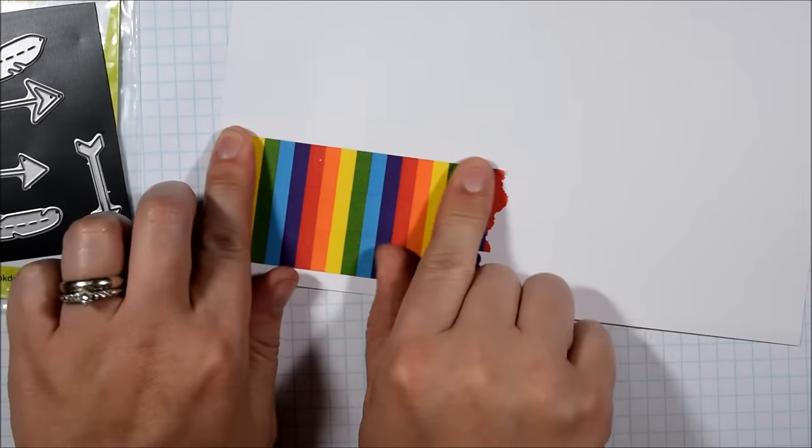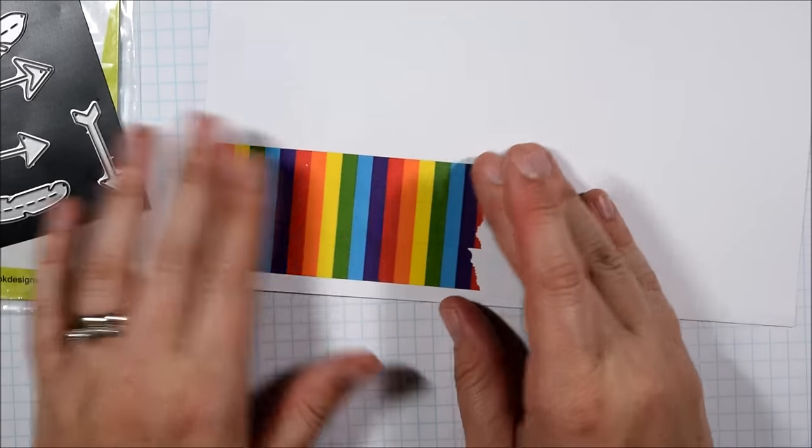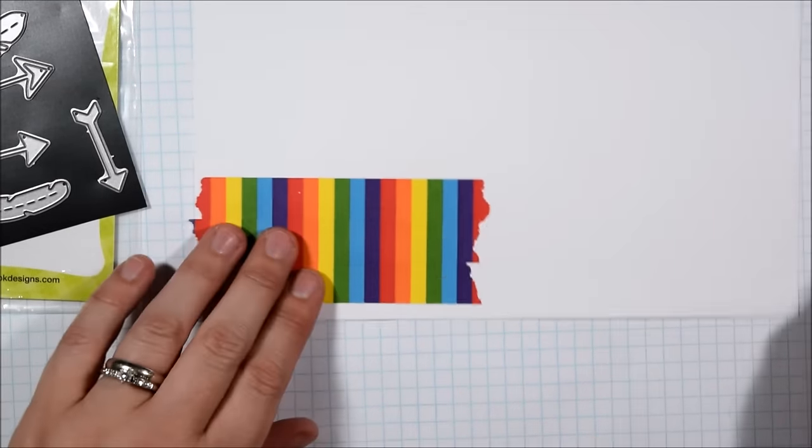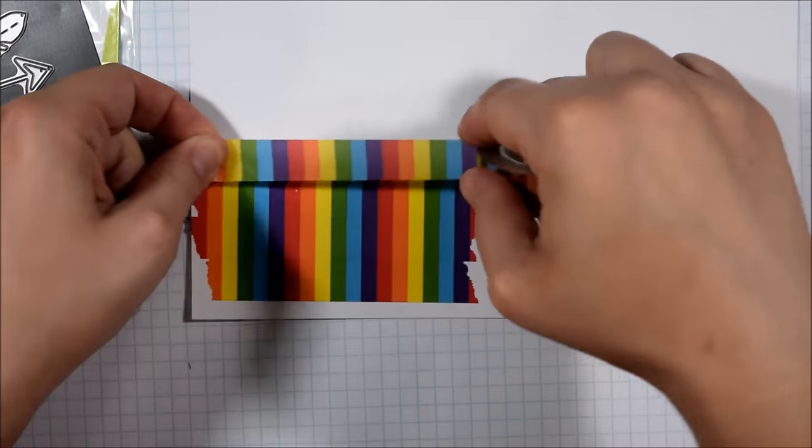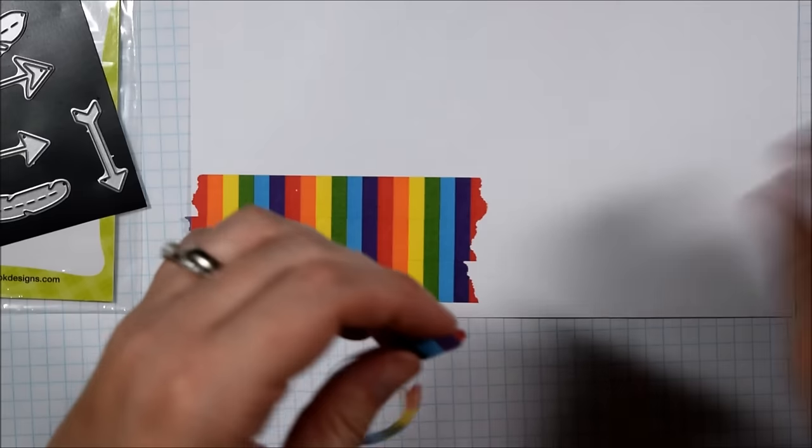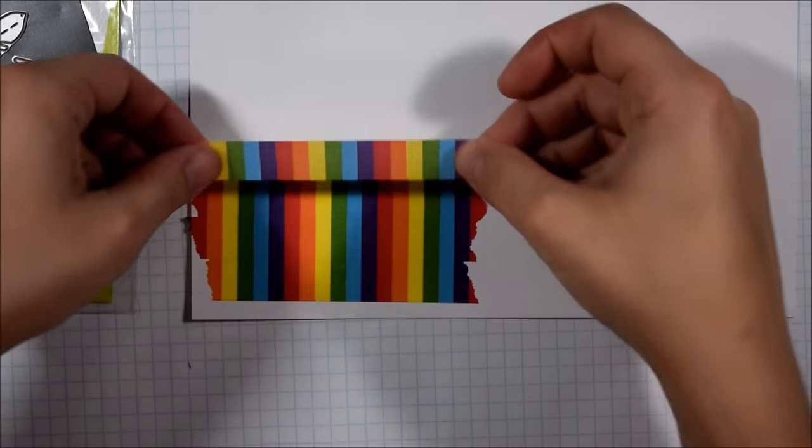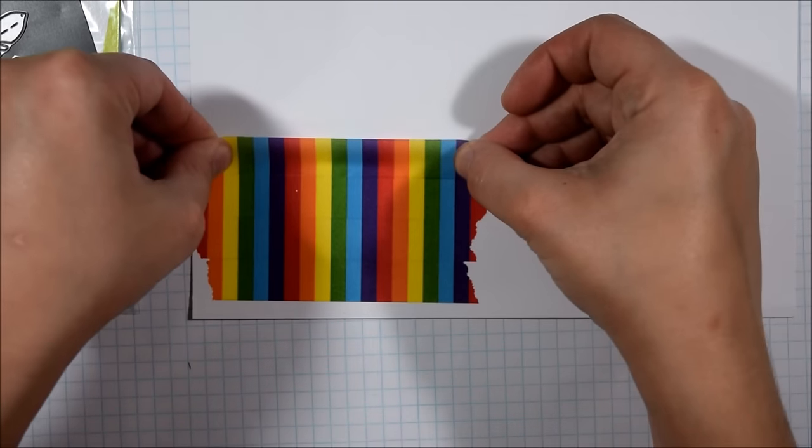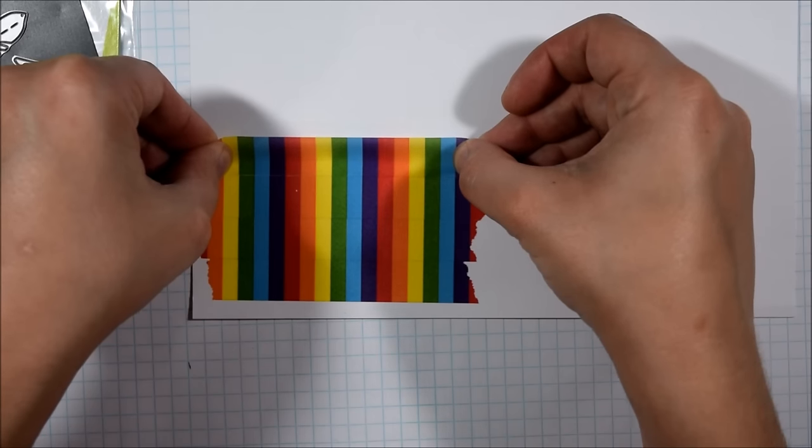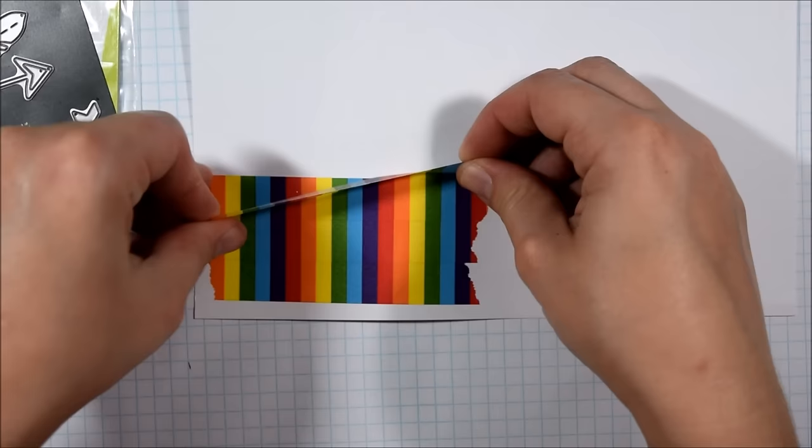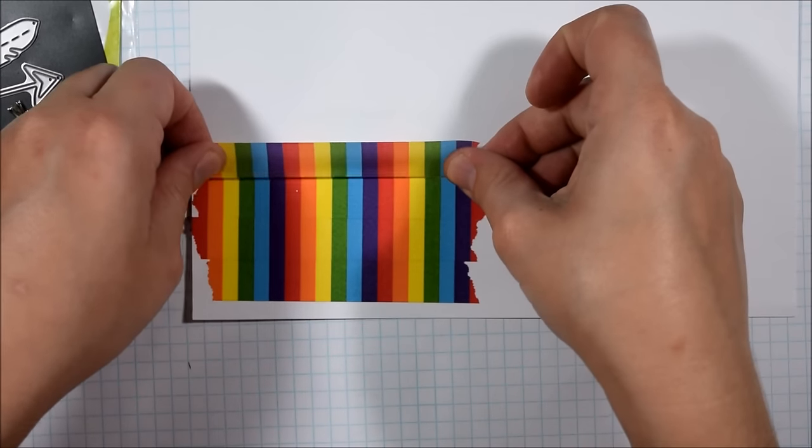Now if you didn't happen to have this particular rainbow washi, as probably many people don't, you could color your paper in a rainbow in a number of ways or simply use rainbow paper, or try any of your other washi tapes, line them up in a similar way, and do some die cutting with them because I'm basically just going to treat this like paper when I'm finished.